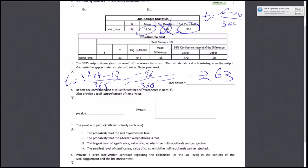Part C asks you to report the corresponding p-value for testing the hypothesis in part A and provide a well-labeled sketch. To find the p-value, look at the SPSS output table marked SIG for significance. SPSS gives a two-tailed p-value of 0.015. Because our alternative hypothesis is one-tailed, mu less than 13, we divide by 2. The answer is 0.015 over 2, which equals 0.0075.